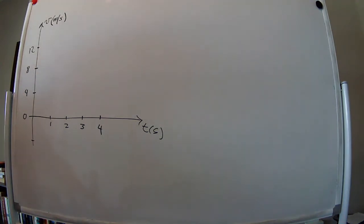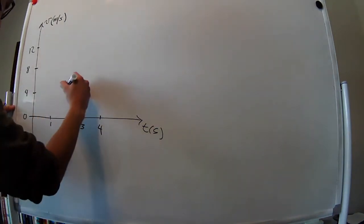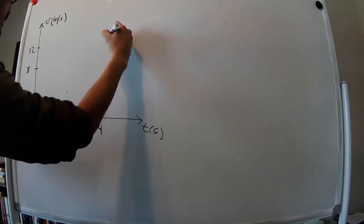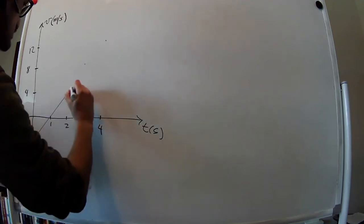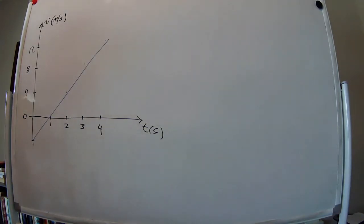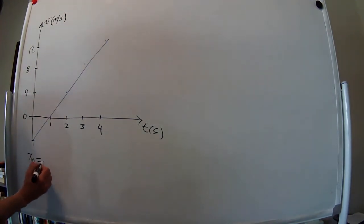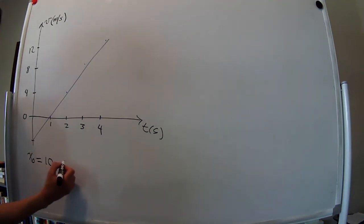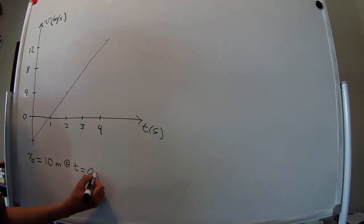The velocity versus time plot is just a straight line. Here's some important information we are given: the initial position of the object is 10 meters at t equals 0 seconds.